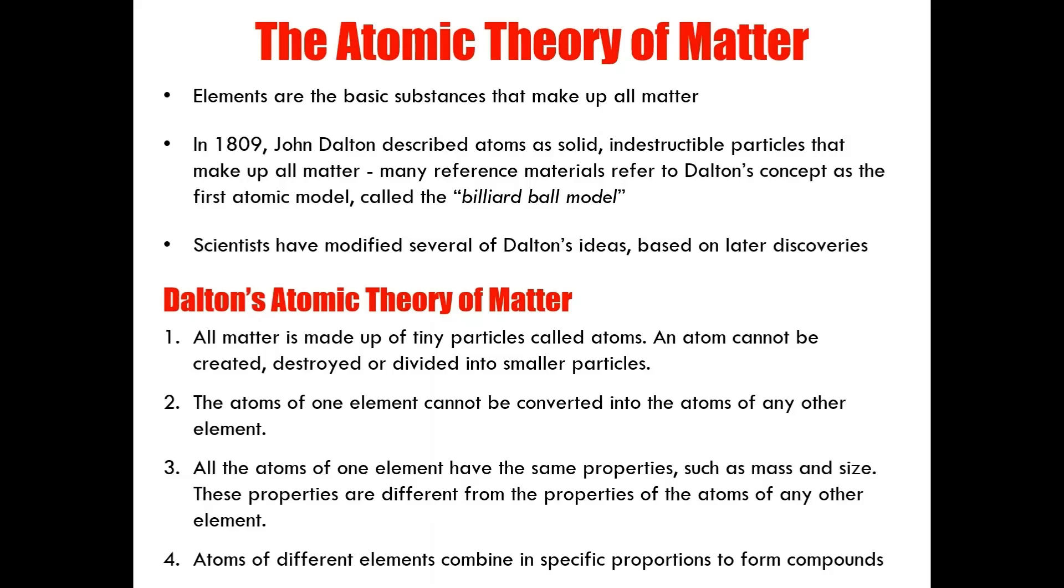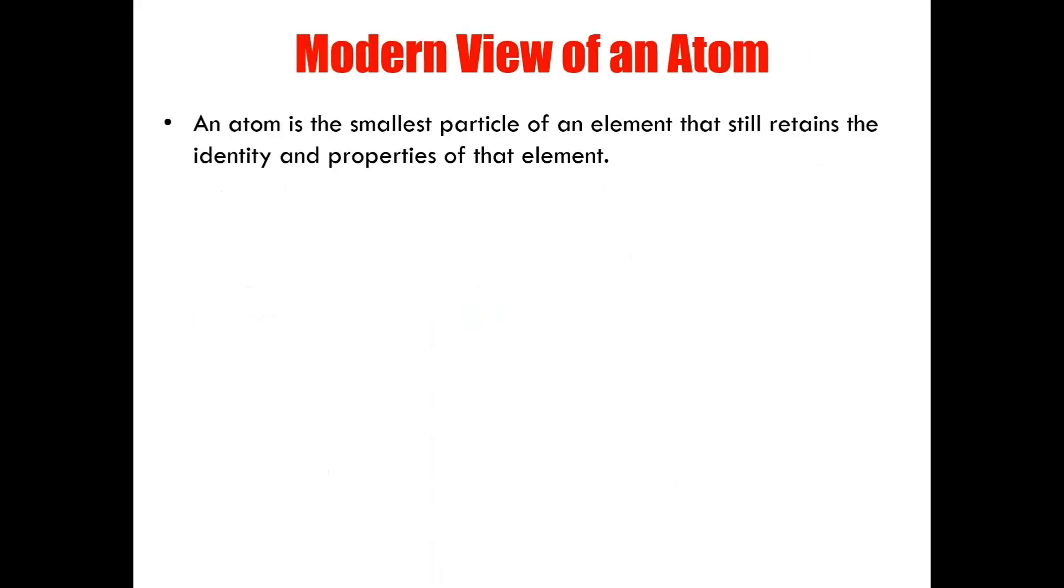Now, since 1809, scientists have made, of course, several discoveries, which called for modifications to John Dalton's theory. For the most part, Dalton's theory still holds up. An atom is the smallest particle of an element that still retains the identity and properties of that element. However, in the years since 1809, when Dalton first proposed this theory, scientists have discovered that atoms are in fact made up of even smaller particles, called subatomic particles.